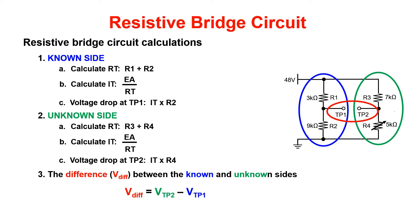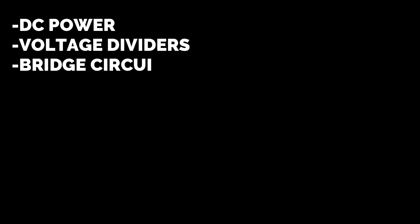Alrighty guys, that wraps up our rewind for day 7. Today we covered power and DC circuits, voltage and current dividers, and resistive bridge circuits. As always, stay classy and keep your head up. We'll see you next time.